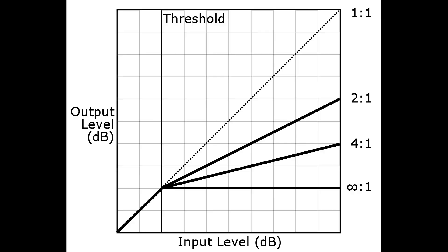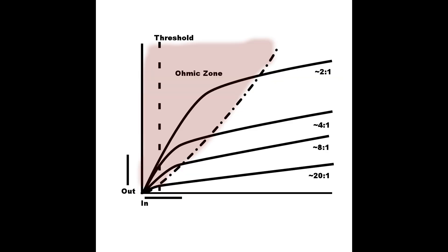Maybe words are not a good illustration for this. We can see the effect of this behavior difference if we look at some compression ratio diagrams around a given threshold. We see the ideal VCA linear compression behavior around the threshold point. An ideal FET circuit yields much different results.